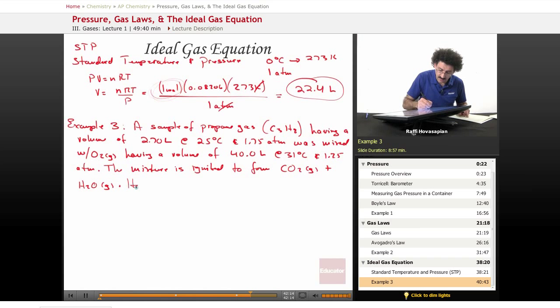The question is, how much CO2 gas is formed at 2.6 atm and 130 degrees Celsius, which is the conditions, pretty standard conditions for once you ignite something.